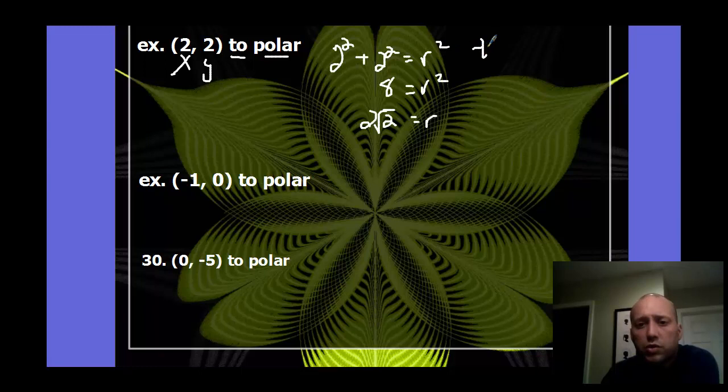We also need to do tangent of theta is y over x, so 2 over 2. So tangent of theta is 1. So you do the inverse tangent. Where is tangent 1 at? And so tangent is 1 in the first quadrant and the third quadrant. But where is the point 2, 2? 2, 2 is in the first quadrant, so our theta value here has to be pi fourths.